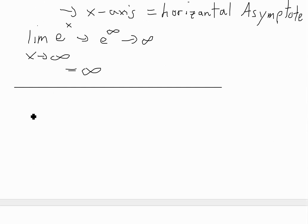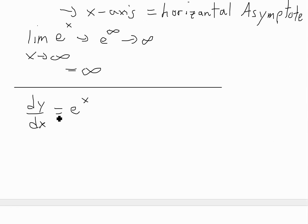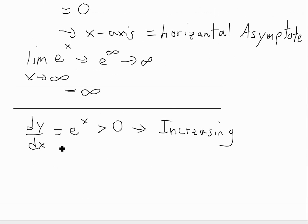Now when you look at the derivative of e to the x — as shown in my earlier video — the derivative dy/dx is equal to itself. So the derivative of e to the x is just e to the x. And again, this is greater than zero, so this just means that it's always increasing.